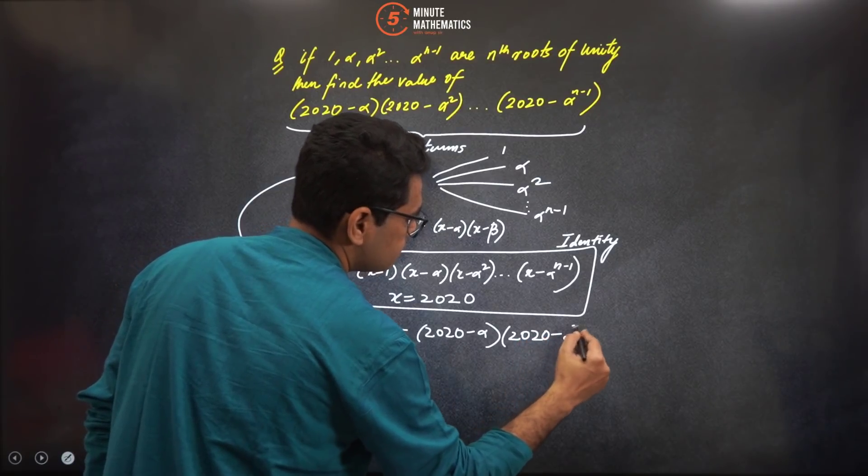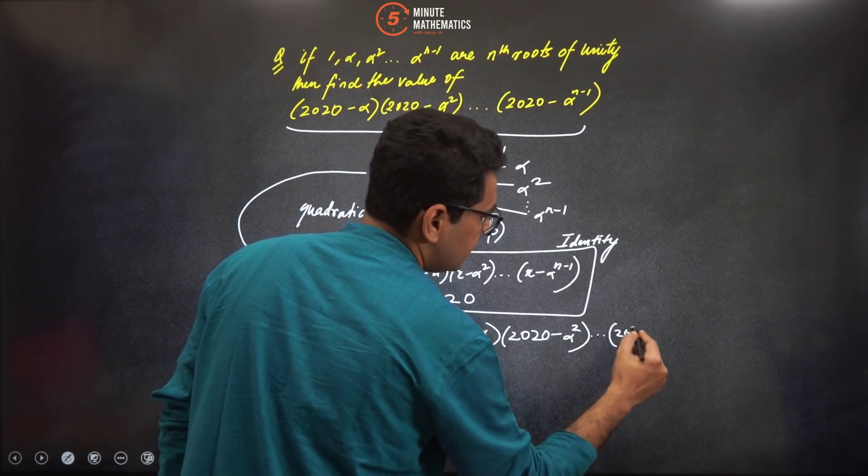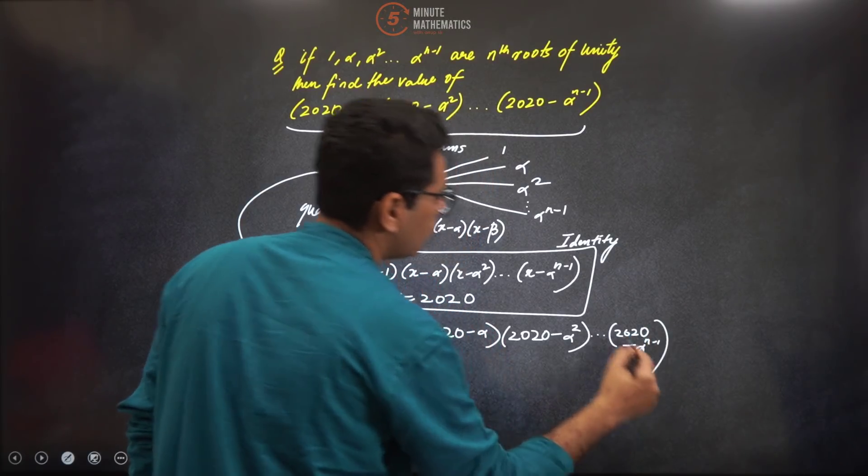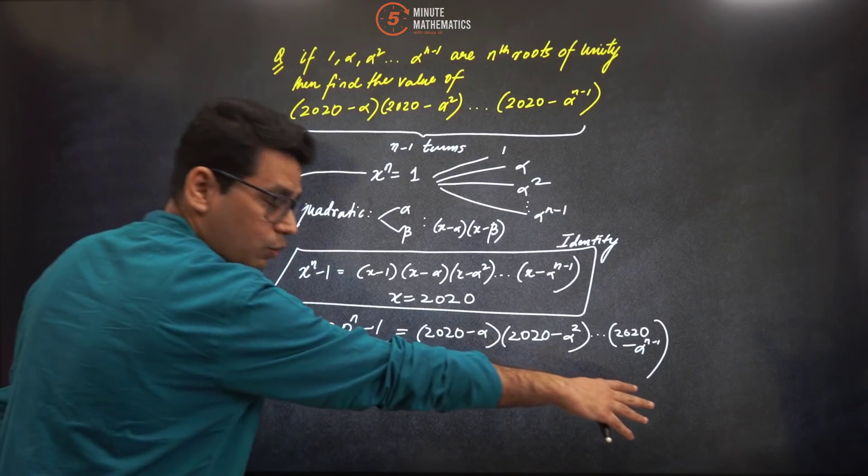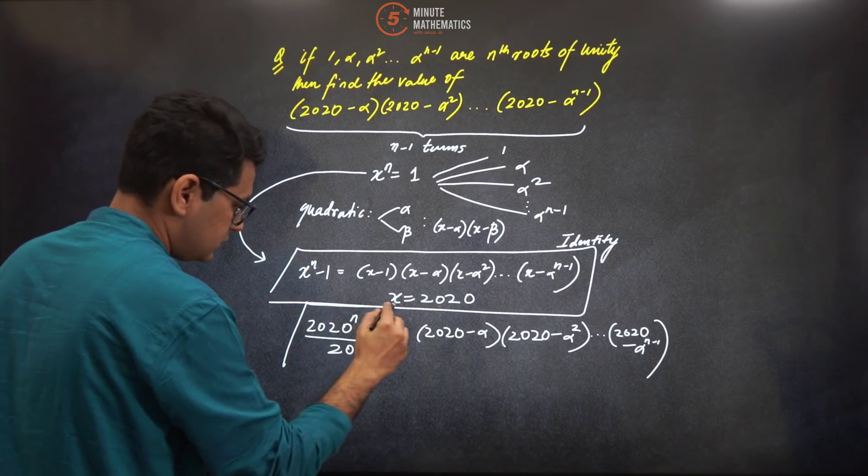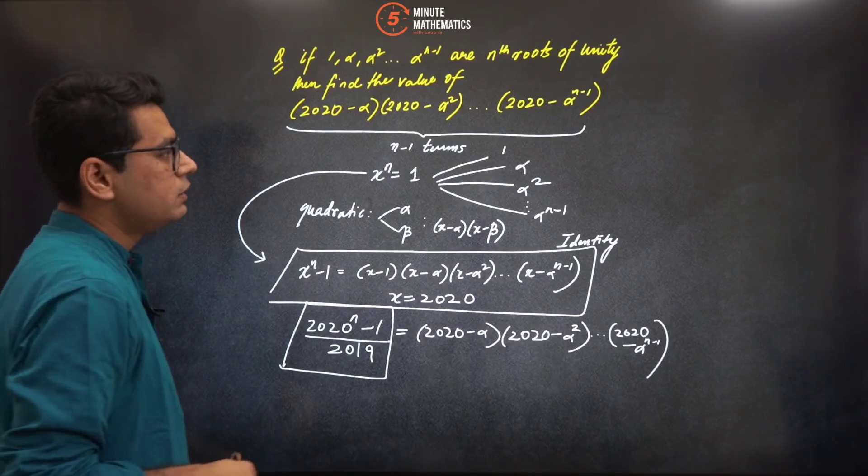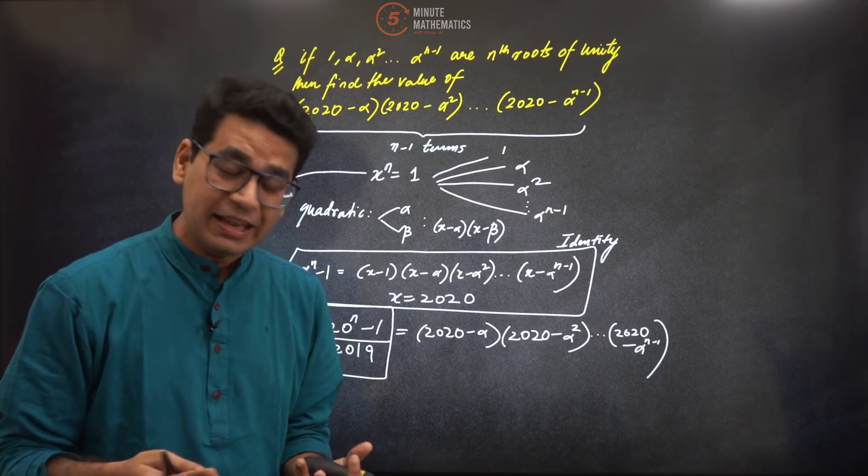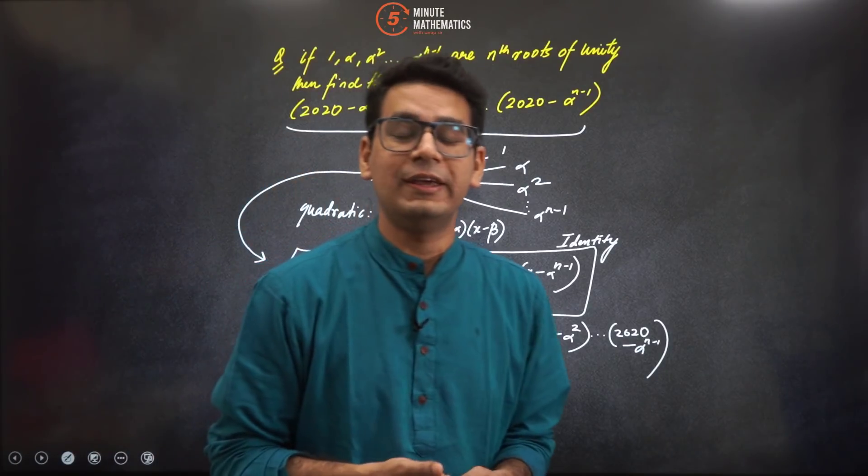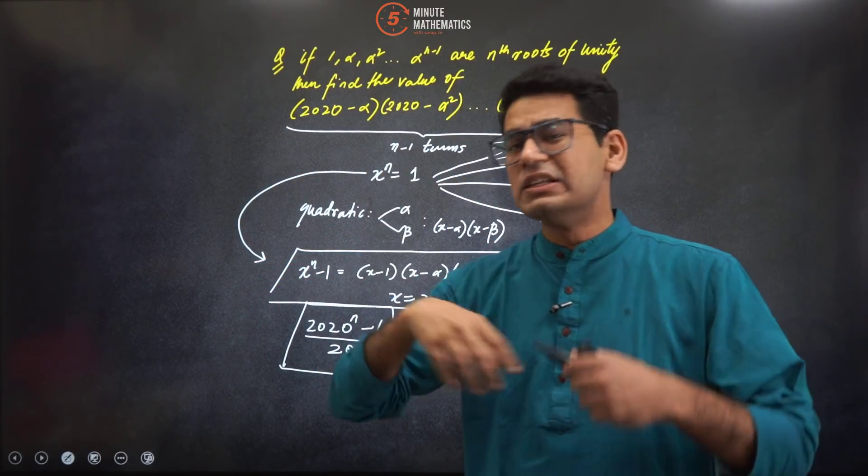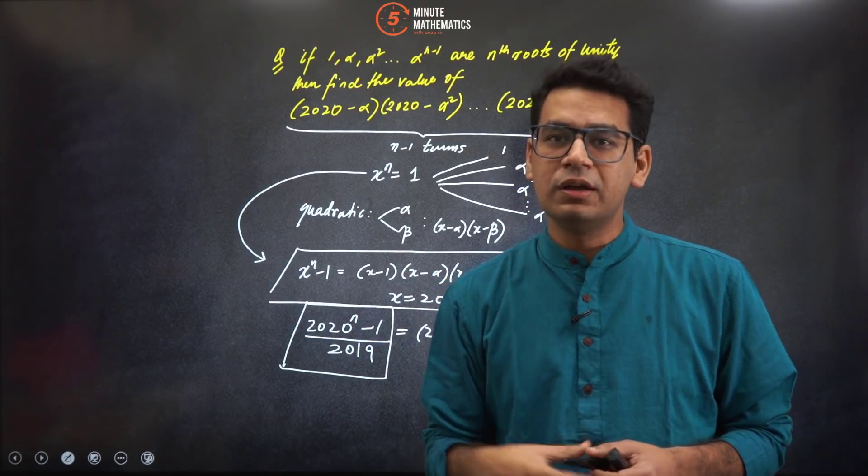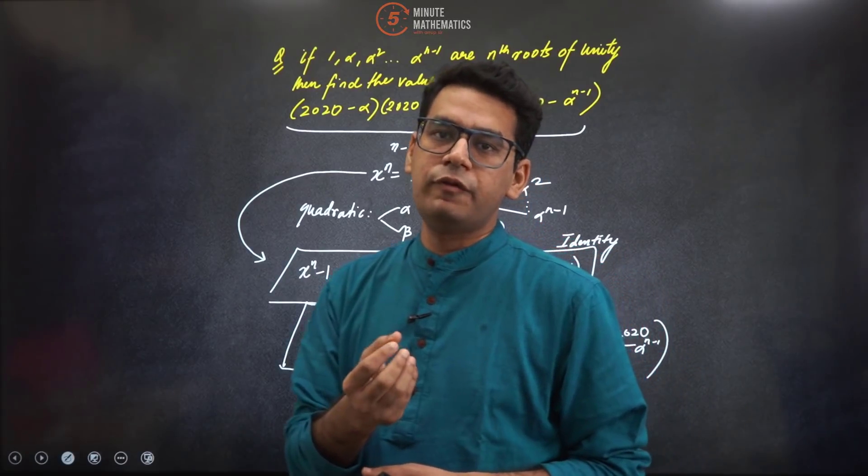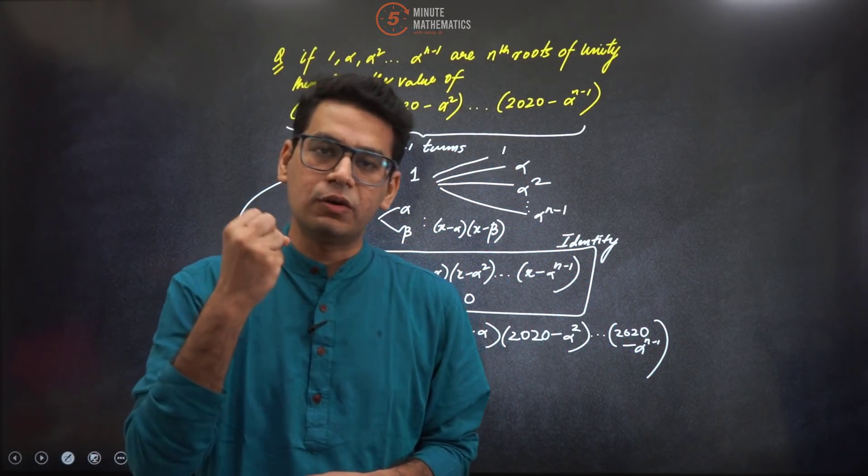Question is over - simply done, neatly done, whatever you want to call in your own lingo. This was the required stuff. We have got the answer. This is the final answer. And now you notice, without even solving or using any formula of nth root of unity - this looks like a question of nth root of unity - we haven't used anything, just simple knowledge of how polynomials are written when roots are given to you.